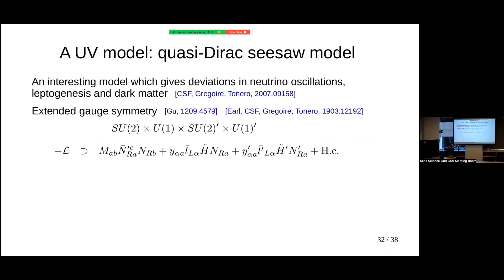For the last part I want to mention a UV model. This is a model we looked at relatively recently — a UV model that gives rise to a quasi-Dirac spectrum for the light neutrinos. It is interesting because it gives deviations in neutrino oscillations, can give rise to leptogenesis, and has a dark matter candidate.